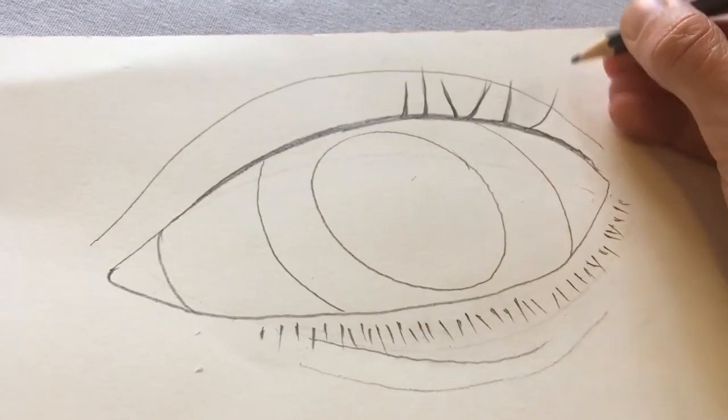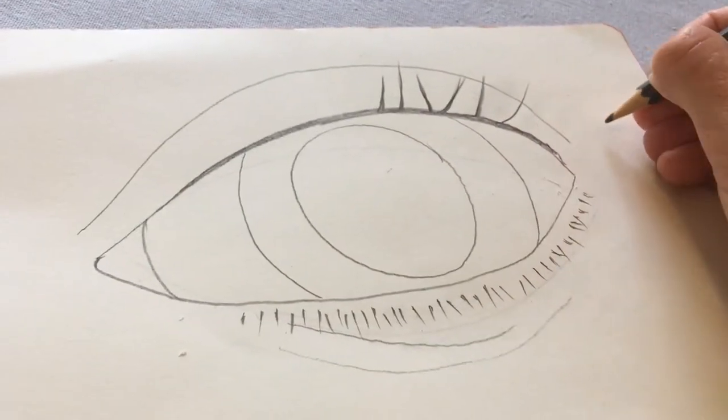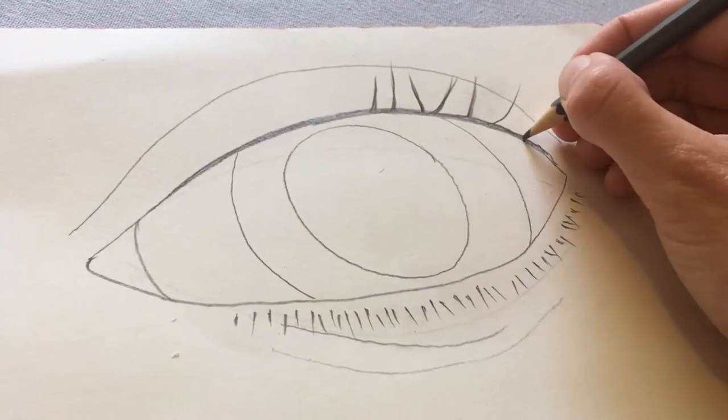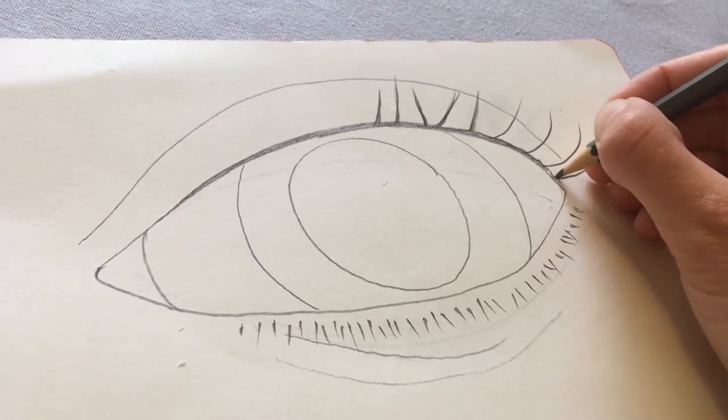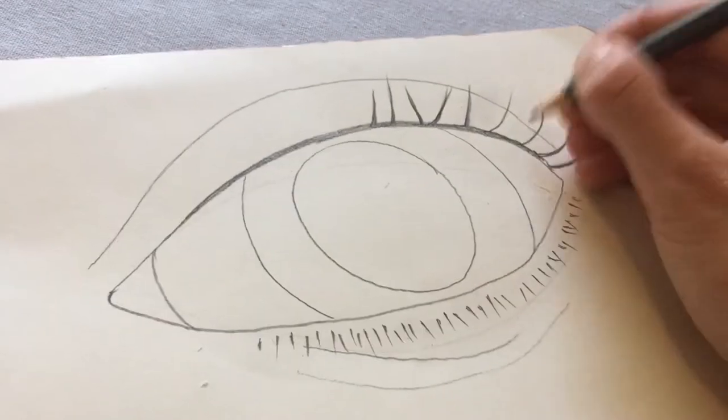Some of them have got a bit of a curve, particularly as you get towards the edge of the eye where you're seeing them on their side. I can see they're curving out this way. So look really closely at your eyelashes. How are they coming off of your eye?